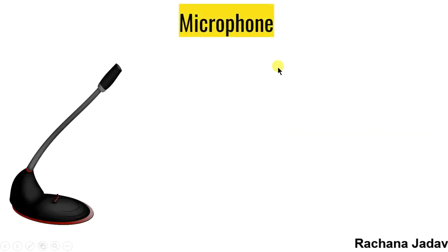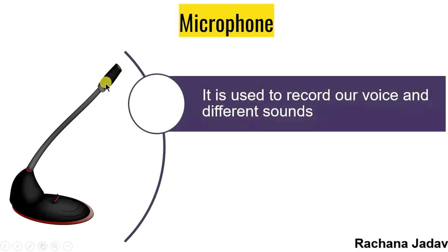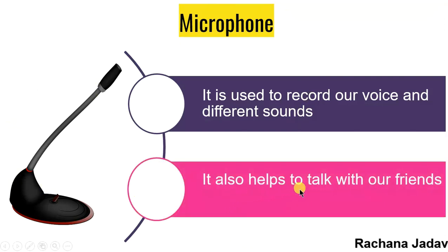Next is microphone. Like you know that on stage, aap stage par jab performance karte ho, tab bhi mic hota hai — wiesse hi humare computer ka bhi mic hota hai, that is known as microphone. It is used to record our voice and different sounds — agar aap kuch recording karni hai, aapke voice ki, toh aap kar sakti ho, jaisa aap WhatsApp mein dekhte ho, hum log audio record karke bhejte hain. It also helps to talk with other friends — aap online chatting karte ho, video conference karte ho. In laptops the microphone is built in, but in a desktop computer you need a separate microphone.